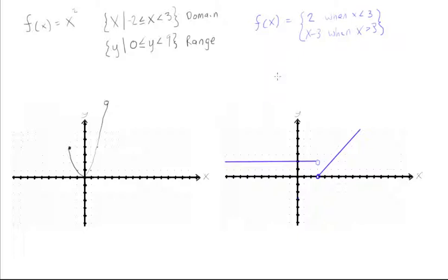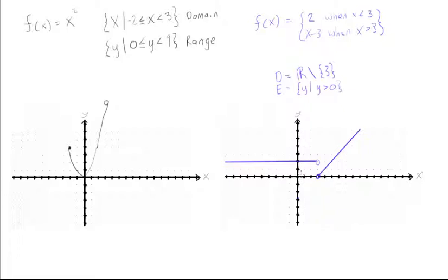If we want to look at our domain and range — the domain is equal to all the real numbers except for where x = 3. We've used this notation before: the real number R with a backslash and 3, just saying all real numbers except 3. And the range is all of the positive y values excluding 0, so y such that y is greater than 0. You can see that here because it's not actually touching the line, so a y value could be 0.00001, but it's never going to touch the x-axis.